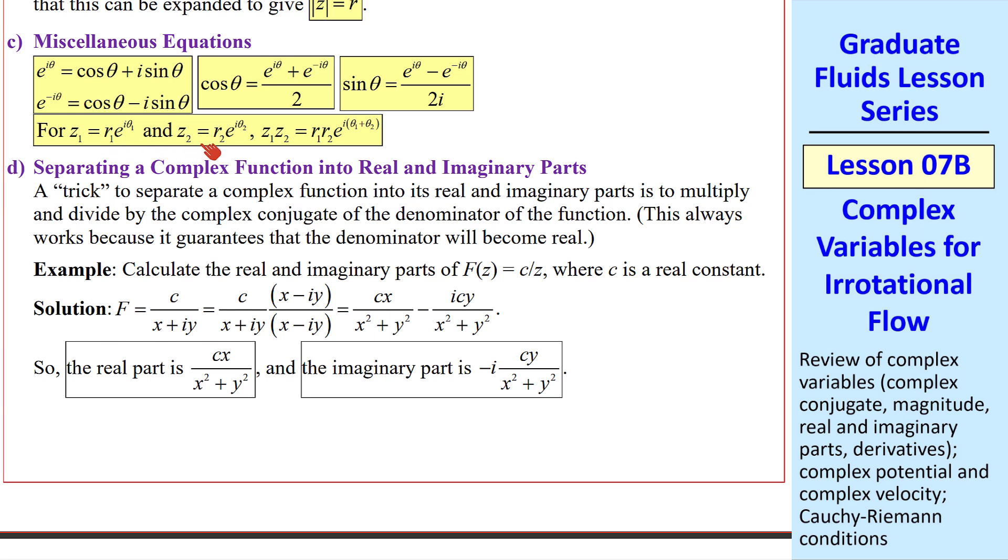When you multiply two complex variables expressed like these, we get r1 r2. And since i appears in both of these exponents, e to the i theta 1 plus theta 2. There's a trick for taking a function like this with a complex denominator and separating the real and imaginary parts. The trick is to multiply the denominator by its complex conjugate and do the same with the numerator. And then after some algebra, you can separate the parts with i and the parts without i, the real part and the imaginary part.